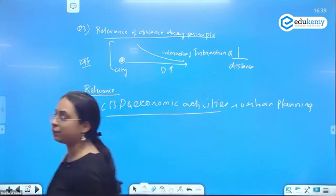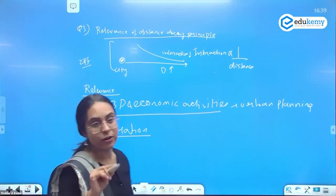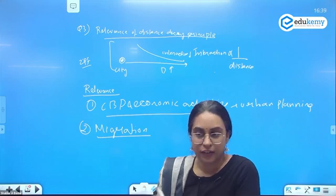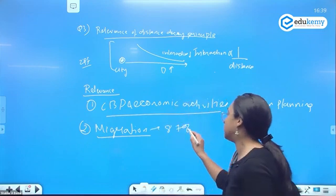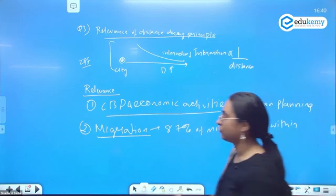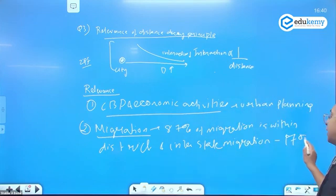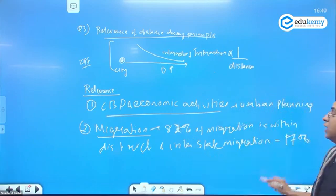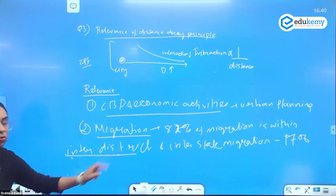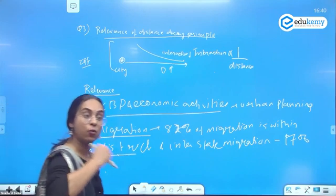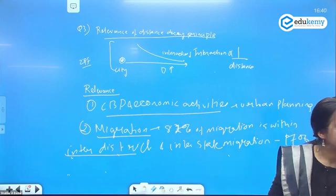If you look at the facts for migration, majority of the migration is short distance. In India, 87% of migration is within the same district — intra-district — and interstate migration is very less. The interstate migration is 17% and 82% of migration is inter-district. So district-to-district migration is more, but when you talk about one state to another state, migration reduces. As the distance increases, the interaction between them reduces.